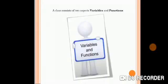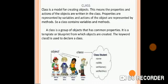Good morning children. In the previous session we learnt about class — a class consists of two aspects: variables and functions. A class is a model for creating objects. This means the properties and actions of objects are written in the class. Properties are represented by variables and actions of the object are represented by methods, so a class contains variables and methods.